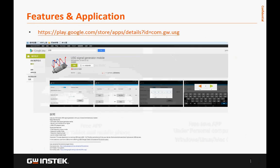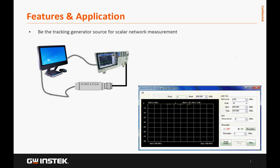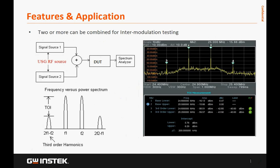The Android app for the USG signal generator is available on the Google Play Store. The USG signal generator can be designated as a tracking generator for the GSP730 Spectrum Analyzer to conduct measurement functions of a Scalar Network Analyzer. A USG CD-ROM provides PC application programs for the primary RF software, allowing users to control USG and GSP730 via the primary RF software.